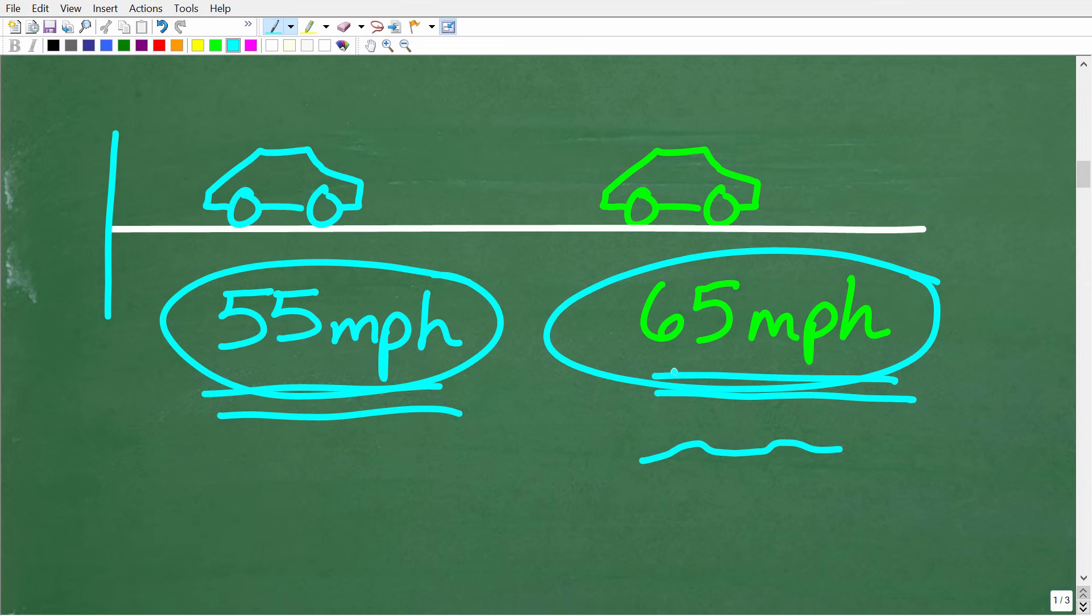So, of course, the faster car is pulling away from the slower car. So the question is, how or what time or how long is it going to be when they're 55 miles apart? Okay, so that's effectively what's going on.